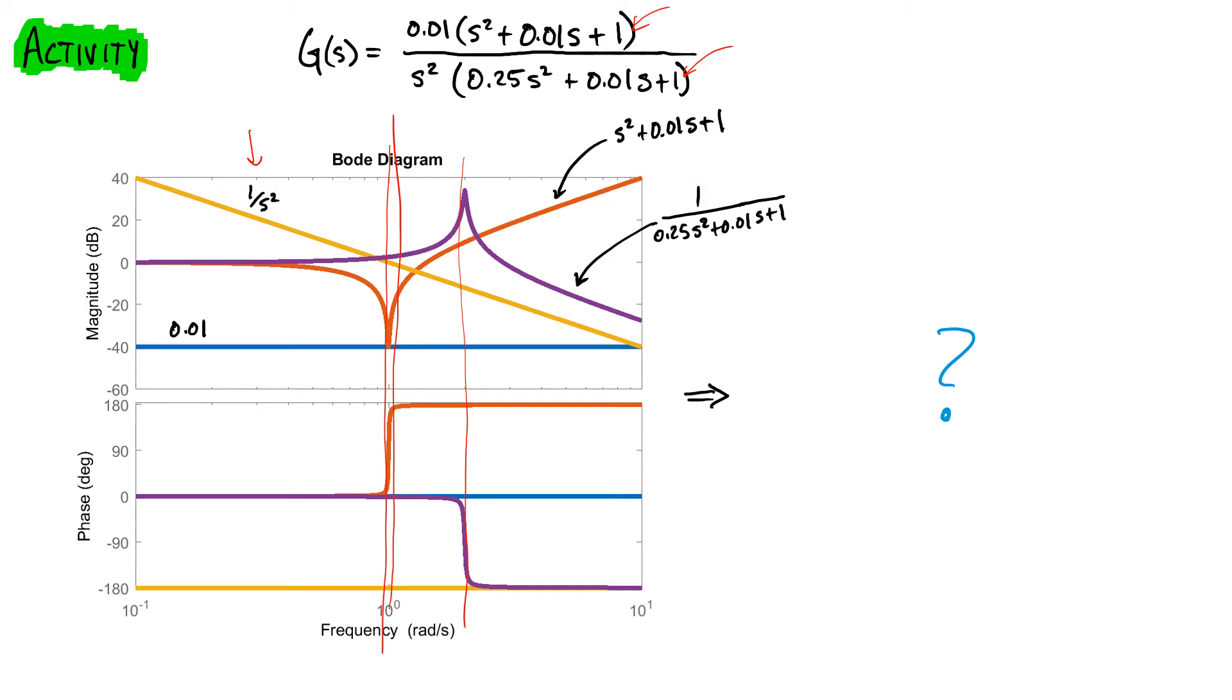And then essentially you know that this one is a zero and this one is a pole. And so with this one, with the pole, you're going to get a phase delay. And so that corresponds to this purple one. With the zero, you know, you're going to get a phase advance. And that comes from this.